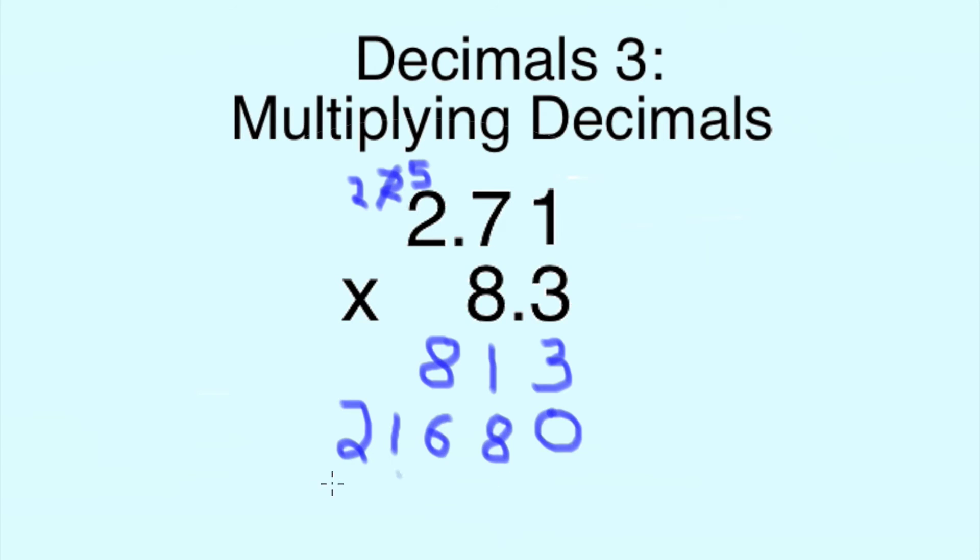Now what we need to do now is simply add these 2 together. So 3 and 0 is 3, 1 and 8 is 9, 8 and 6 is 14, so we'll put the 4 there, carry the 1 above there. Now 1 and 1 makes 2, 2 and nothing is 2 and we're left with this final figure.